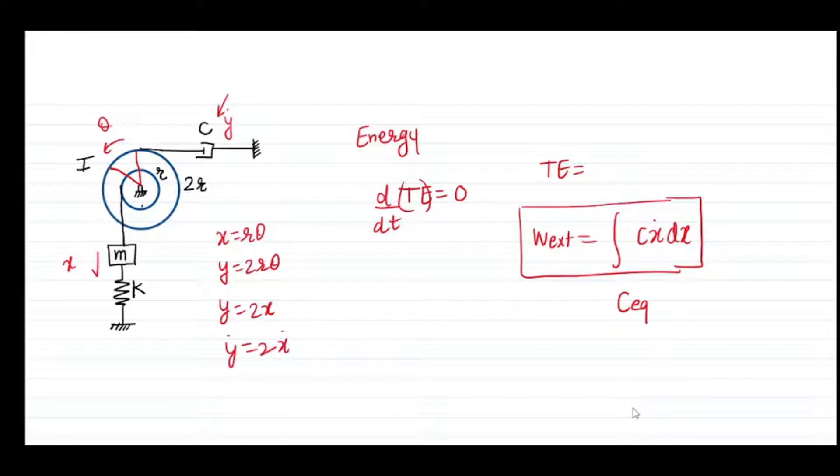If I write the total energy expression for my mass, I will put one-half M X dot squared, the rotational kinetic energy of the pulley will be one-half I theta dot squared, and the potential energy in the spring will be one-half K X squared. I am going to separate out the two parts: one is the conservative part of energy where we have conservation of energy in the spring and the mass, and we are going to differentiate this expression.